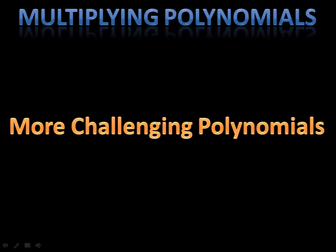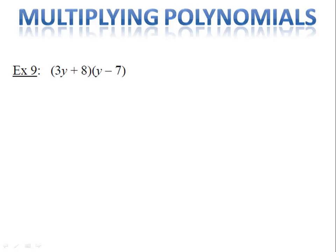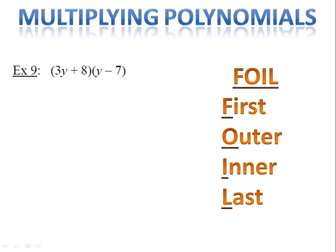Now that we've reviewed the distributive property, let's take a look at some more challenging problems. Suppose we have two binomials: 3y plus 8 and y minus 7. You may know that you use FOIL — where you multiply the first terms, the outer terms, the inner terms, and the last terms. But let's think about this in terms of the distributive property instead.